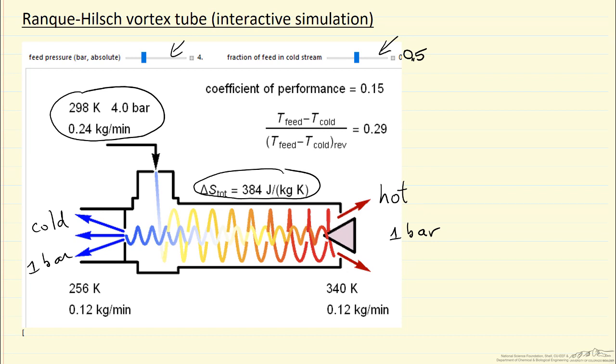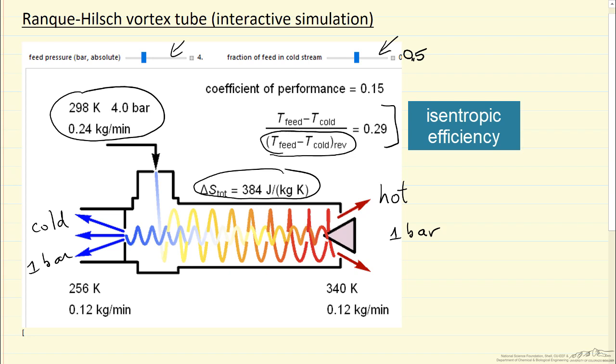Now the actual values shown here are from experimental data, and we can calculate then a comparison, you might call this isentropic efficiency. If we were to take a gas at four bar and 298 and have it undergo adiabatic reversible expansion, then we would get a larger temperature decrease. So that's what the denominator is here. The numerator is the actual temperature decrease, in this case 42 degrees Kelvin.